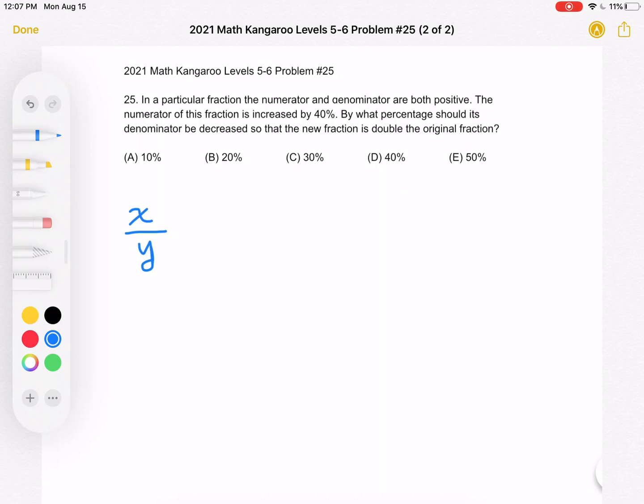So to start, let's say we have the fraction x over y where x is the numerator and y is the denominator. So this is our original fraction.